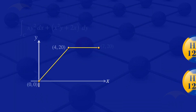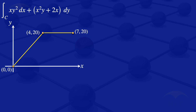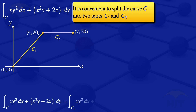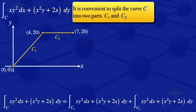Usually when you are given line integrals of this form, it is convenient to split that curve into two parts — we'll call them C1 and C2. C1 goes from (0,0) to (4,20) and C2 goes from (4,20) to (7,20). The integral along C equals the integral along C1 plus the integral along C2 of xy² dx + x²y + 2x dy.